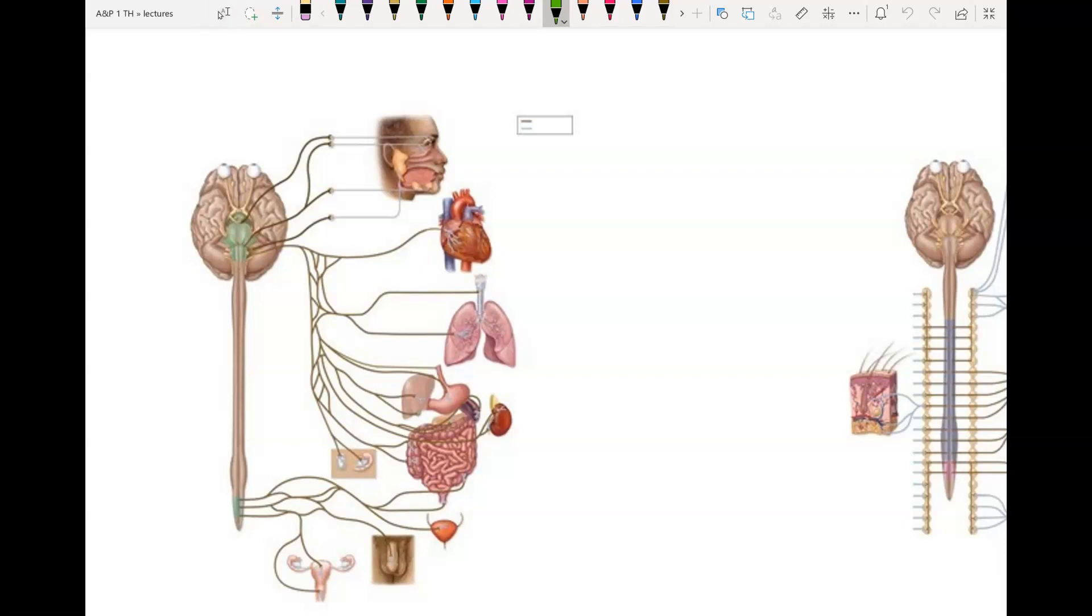Now we're ready to put it all together and look at the complete picture of autonomic stimulation. We're going to start with the parasympathetic. So remember with parasympathetic, you have the long preganglionic, then you have a short postganglionic.